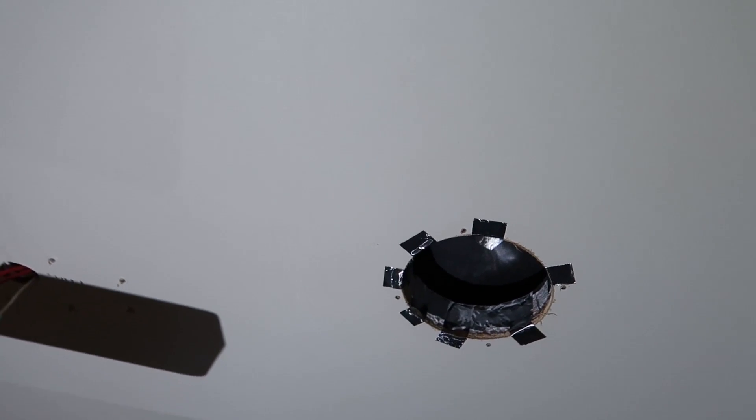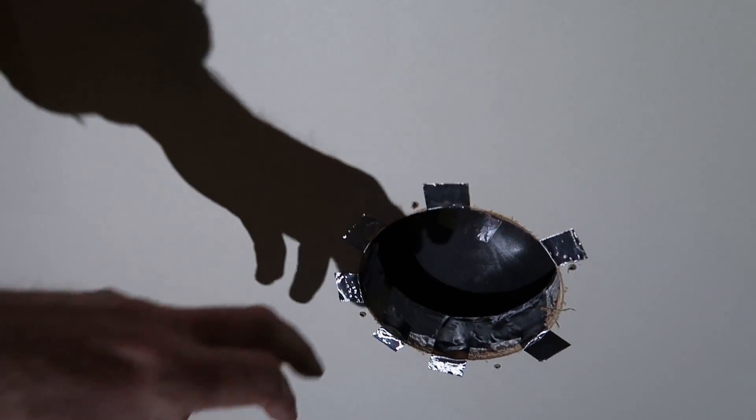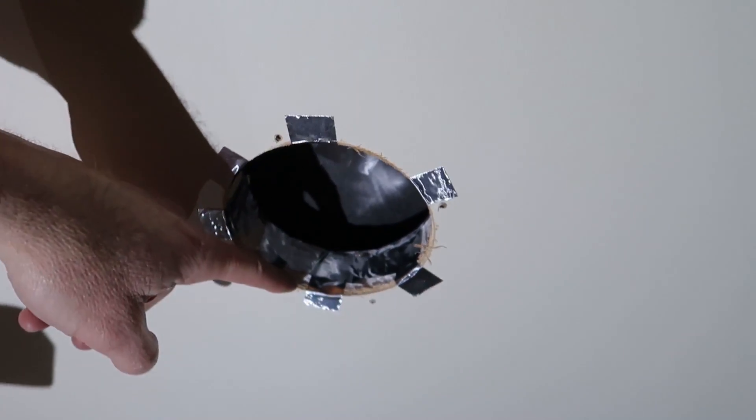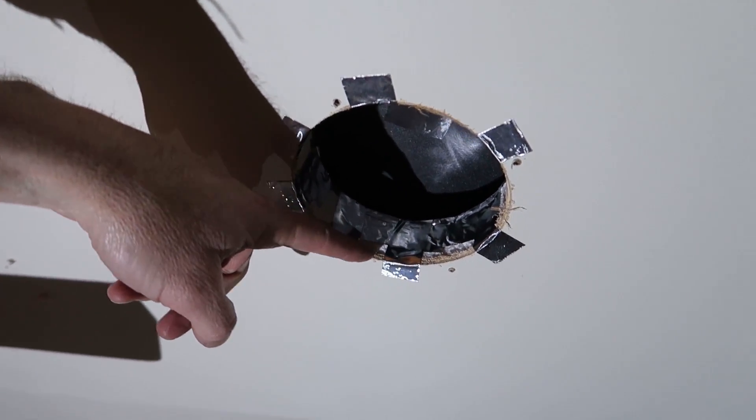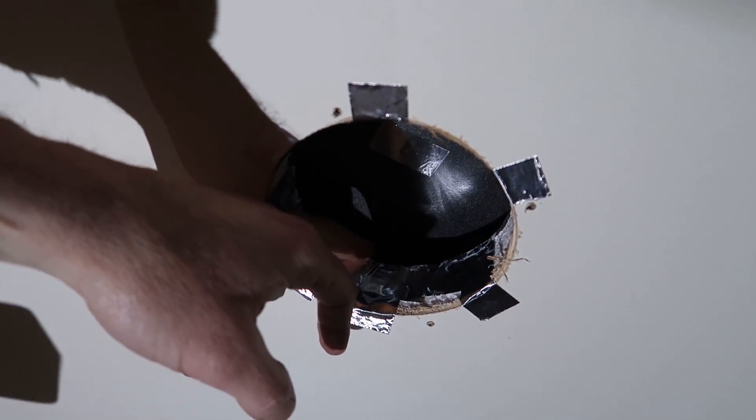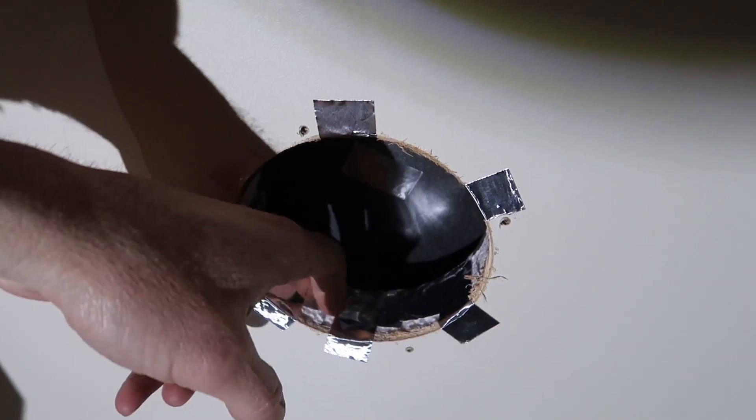So in the process of poking around up in there I noticed that there's a bunch of layers here. There's a layer of Luan plywood which makes up the ceiling panel. There's also a layer of styrofoam insulation, and then there's this rigid foam ductwork.